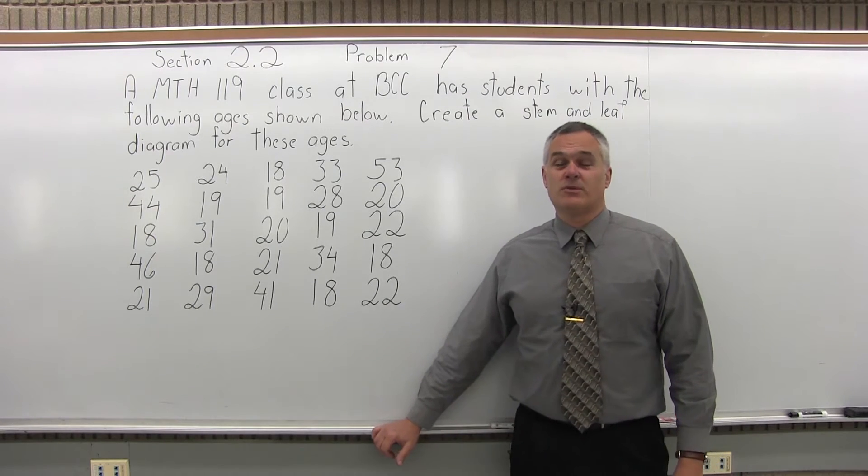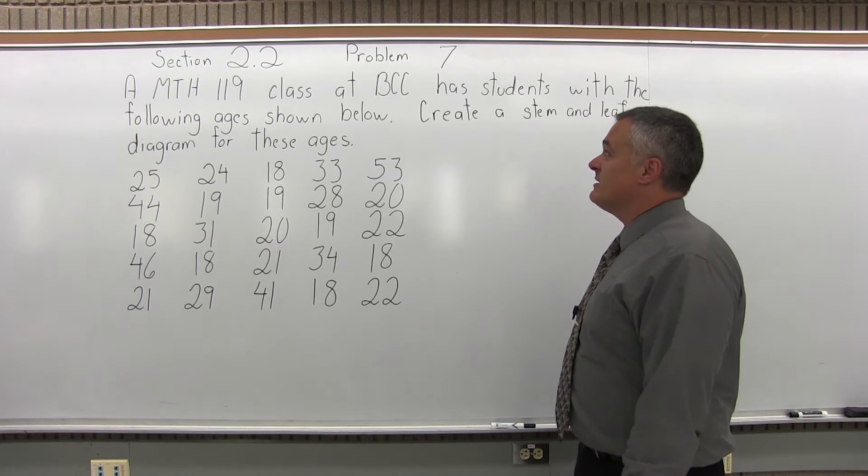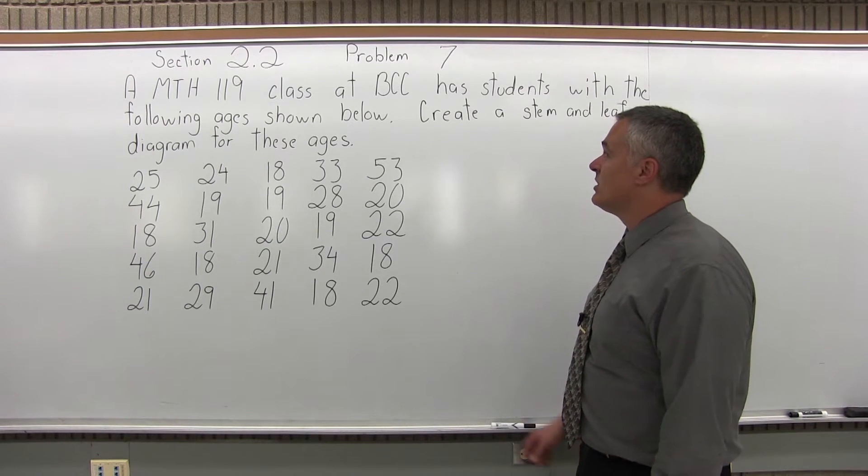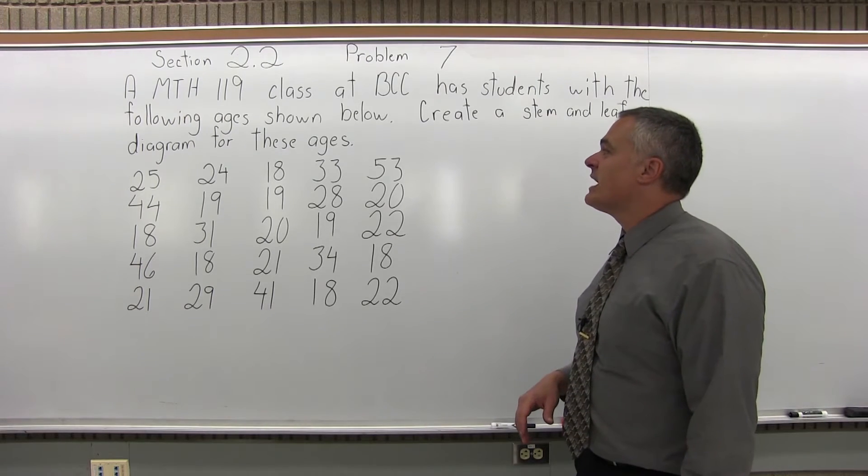This is Section 2.2, Problem 7. It says a Math 119 class at BCC has students with the following ages, shown below. Create a stem and leaf diagram for these ages.